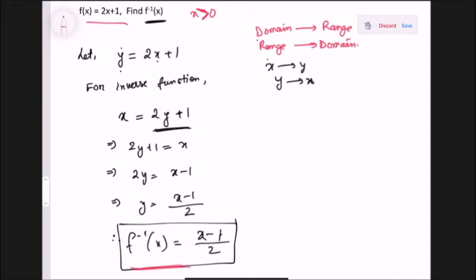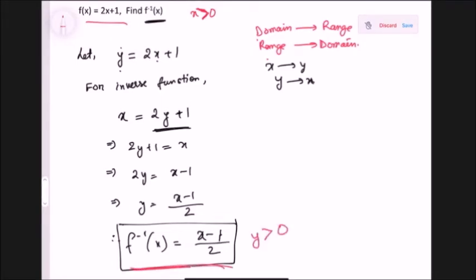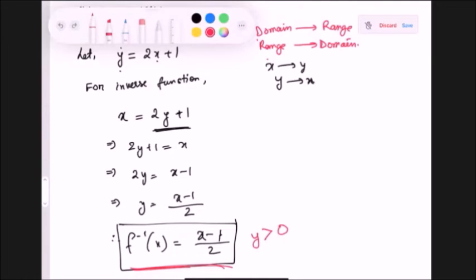it means for this inverse function y > 0 because the domains are converted into range since we're using the opposite operation. Suppose it's given that y > 5; in that case, the domain here will be x > 5.